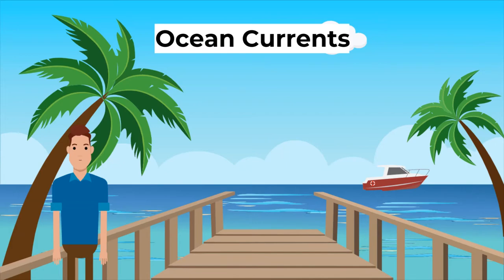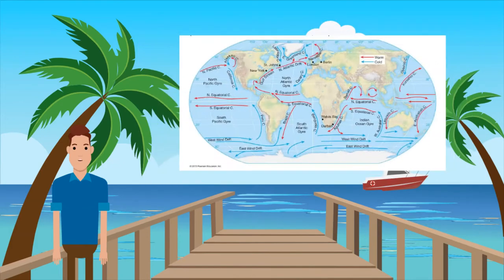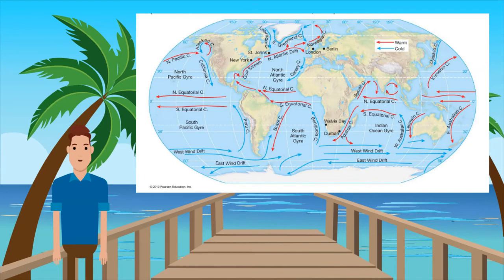Now let's consider ocean currents. Ocean currents are the predictable, continuous movements of water in the ocean. There are several major ocean currents that transfer energy to other regions. The Gulf Stream is an example — warm water from the equator flows up to the North Atlantic via the Gulf of Mexico, which causes the climate in Europe to be warmer. Without this ocean current, Europe would be 5 to 10 degrees Celsius colder. Ocean currents are driven by winds, the Coriolis effect, the tides, and density differences — density differences being the result of differences in temperature and salinity.